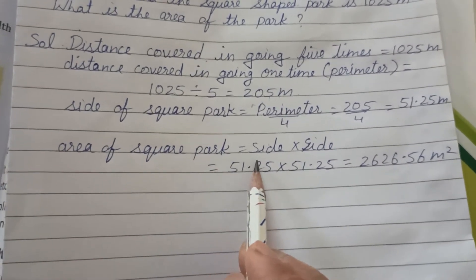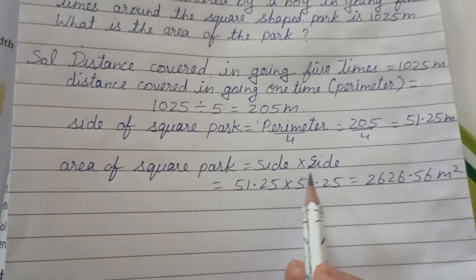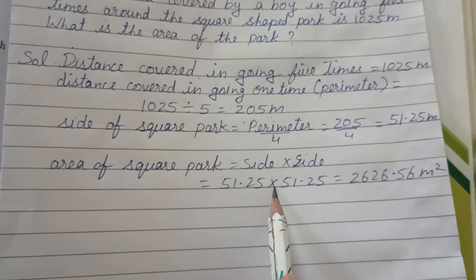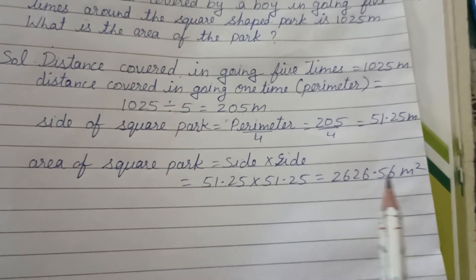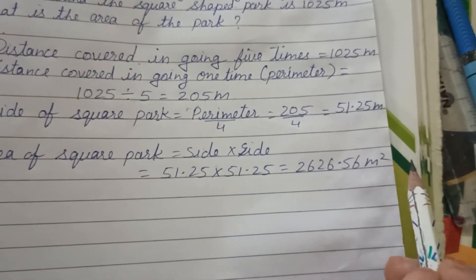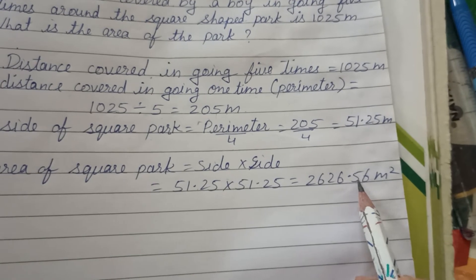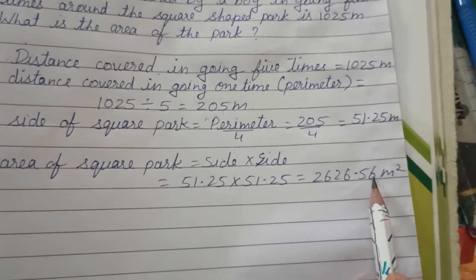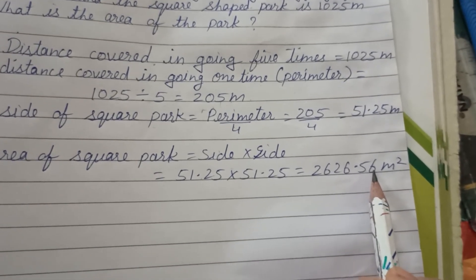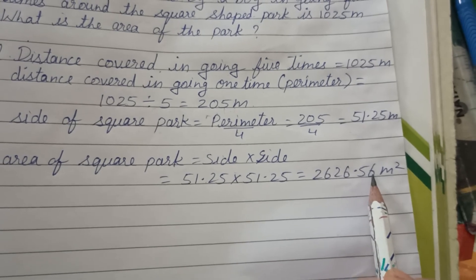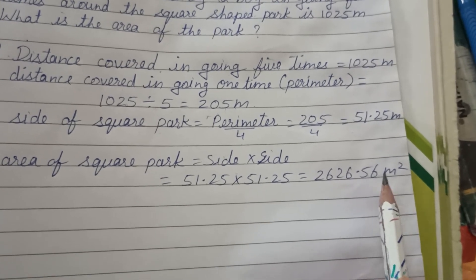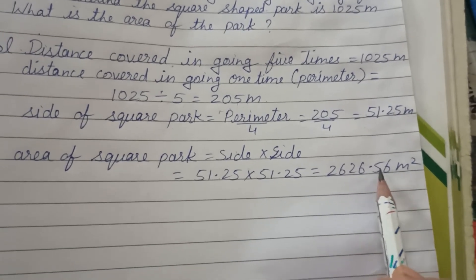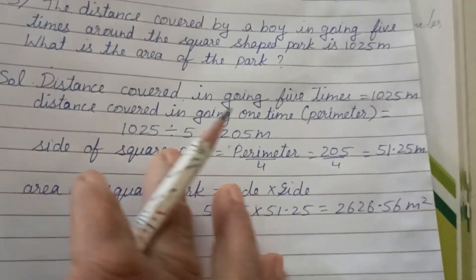Area of square park = side × side = 51.25 × 51.25. The answer has four decimal digits; we worked out two digits after the point. You may round and leave two decimal digits.